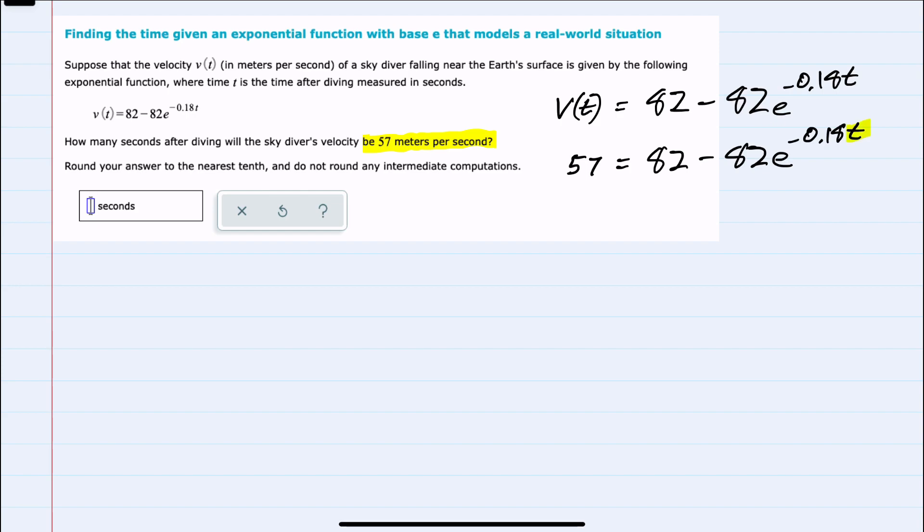And I'll start by moving any terms that do not have t in it over to the other side of the equation. So I can subtract this 82 from both sides to move it from the right over to the left, giving me a negative 25 on the left.